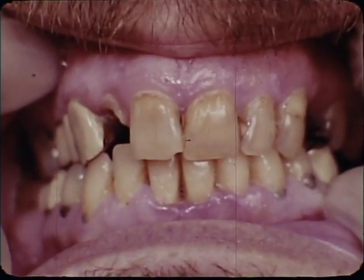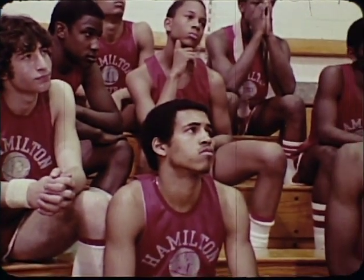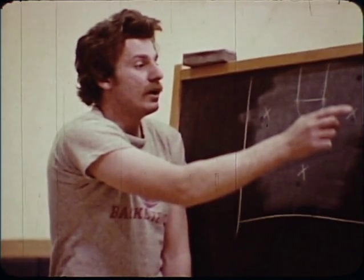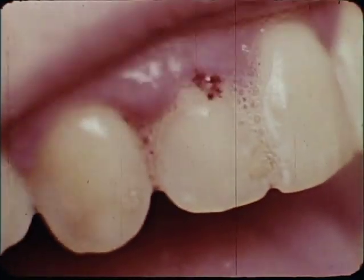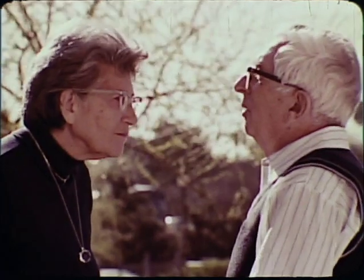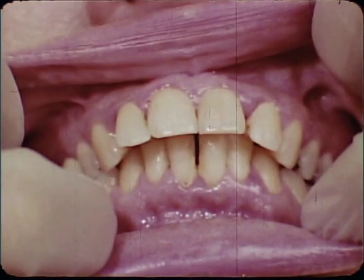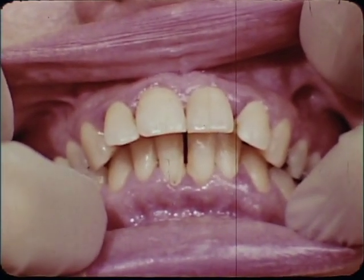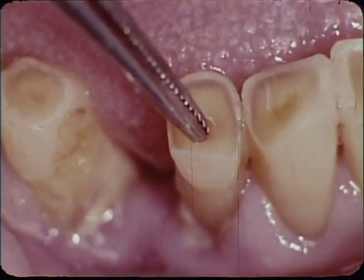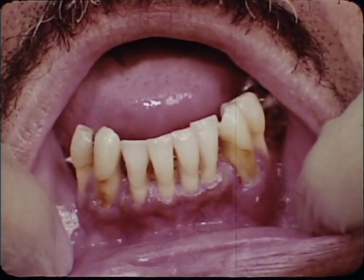We have to know who the guys on the other team are — what they can do, what they can't do — in order to defeat them. Victory begins with recognizing the opponent and his style of play. The cause is known; the symptoms can be recognized: gums that bleed easily when brushing or flossing, persistent bad breath, soft, swollen, or tender gums, pus between the gums and the teeth, loose teeth.